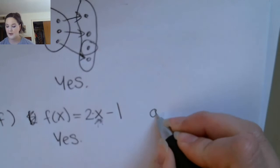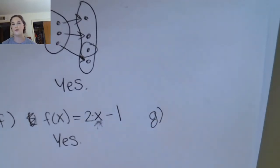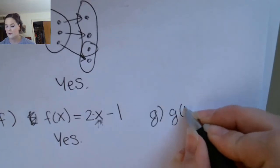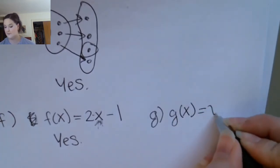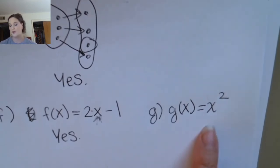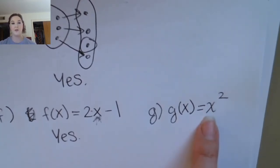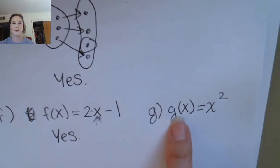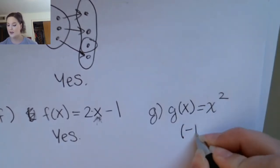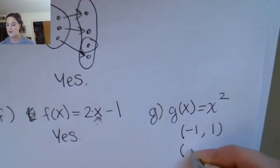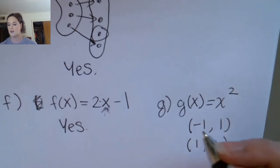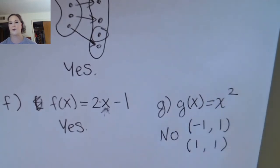You might be thinking — what function doesn't have that property? Here's an example you're pretty familiar with. Is it possible to plug in two different values for x that give the same value for y? Yes, absolutely. You could plug in negative one and positive one, for example. So this is a reason that this function is not one-to-one.